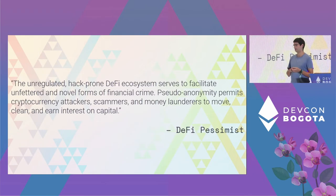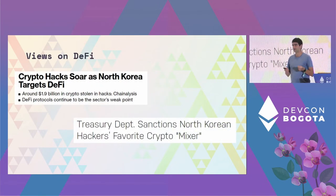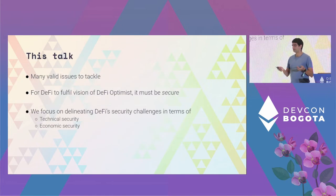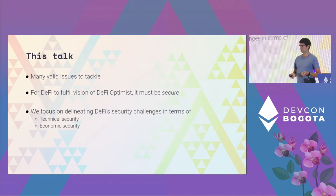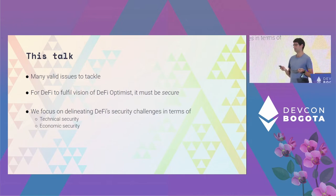On the other hand, there's a pessimistic view: DeFi is unregulated, hack-prone, and its pseudonymous nature allows people to commit crimes like scamming and money laundering. There have been many hacks — North Korean hackers exploiting protocols, crypto mixers being sanctioned, and so on. In this talk we focus mostly on security, which we think is absolutely essential for the DeFi optimist's vision to be fulfilled. We'll differentiate between what is a technical security problem and what is an economic security problem.